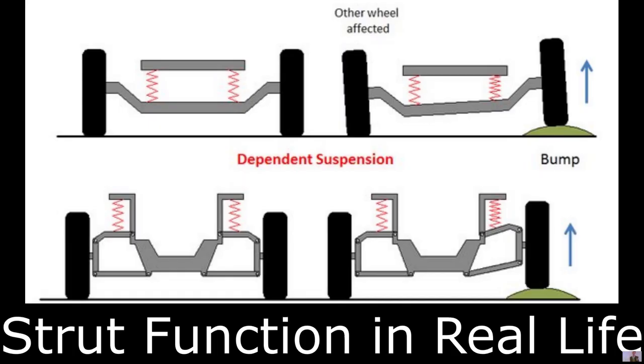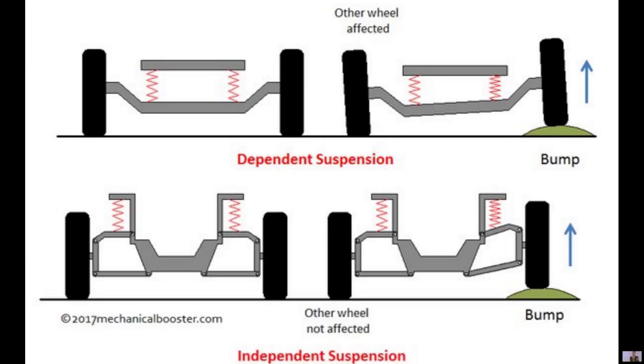First, we'll discuss the overall purpose of a car strut. It's to provide structural support for the vehicle's suspension and to hold the tire in an aligned position. The strut is also there to help dampen vibrations when a bump has gone over.